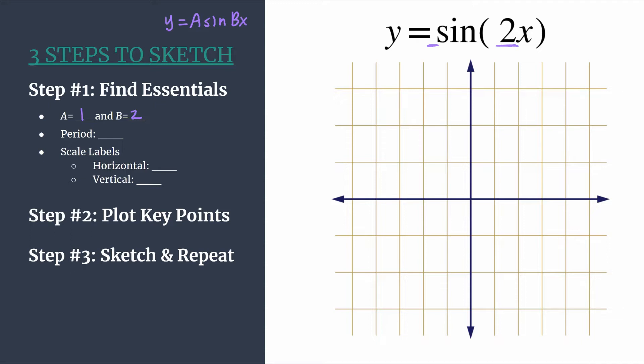And remember, b tells us how many cycles happen between 0 and 2 pi. And it also helps us find our next piece of essential information, the period. So to find the period just divide 2 pi divided by b. So our period will be pi. And that is consistent with what we just said that two cycles should happen between 0 and 2 pi. And the period is just the length of one horizontal cycle.